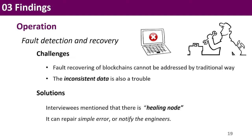Once the blockchain system is deployed, it is quite hard to modify. The fault recovery of blockchains cannot be easily addressed by traditional program debugging methods such as printing logs. Inconsistent data is also a problem because it is difficult to decide whether to update the data or which version of the data should be chosen. Our interviewees mentioned that a healing node can be designed when developing the blockchain. The healing node can detect and feed back error information to specific modules. If the error is simple, the system can repair itself; otherwise, maintenance engineers will be notified. This may be a potential solution that still needs efforts and contributions in academia.